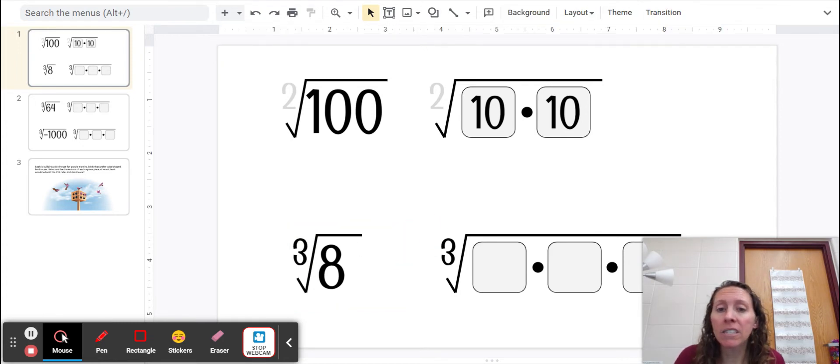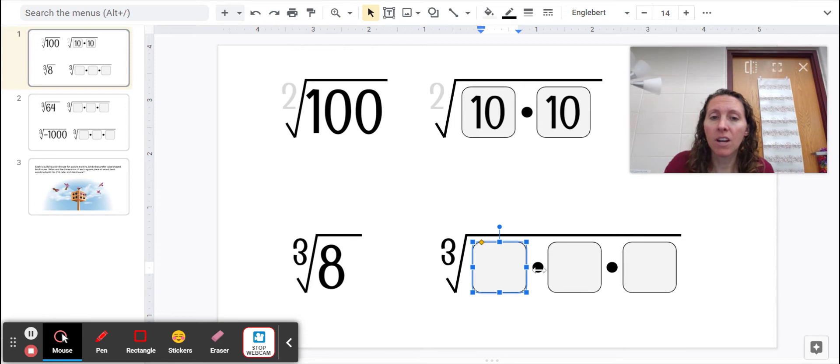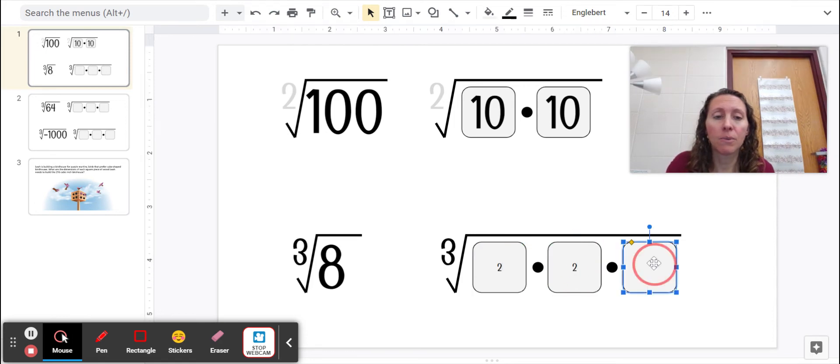the cube root of 8 means what number times itself 3 times is equal to 8. So let's try 2. 2 times 2 is 4, and 4 times 2 is 8. So that works out.